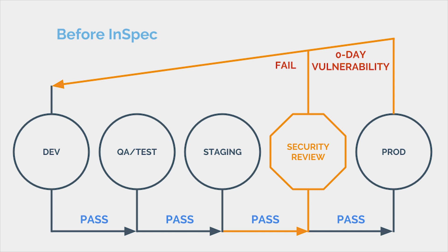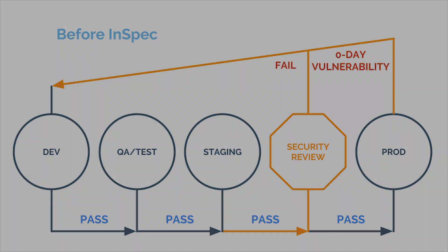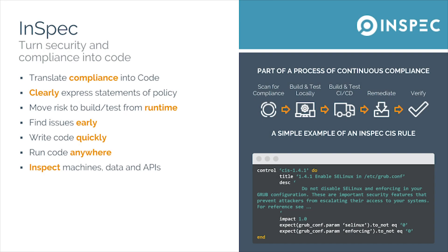How are you going to identify which systems in your fleet are vulnerable? Once you have a remediation, how are you going to verify that it actually patches the vulnerability, or that nothing the developers do will overwrite the change? With InSpec, we've described our policies using code, which means we can use them again and again, customize them, or modify them whenever we need to.